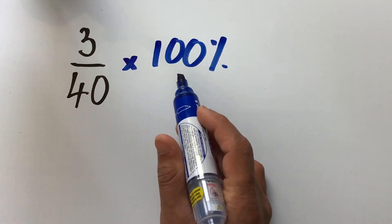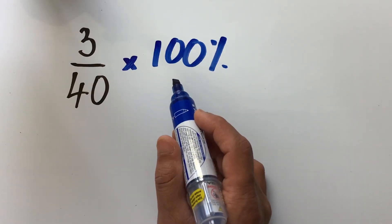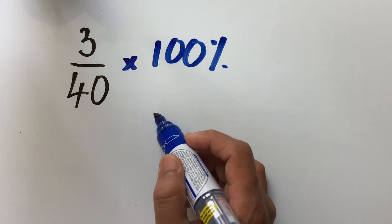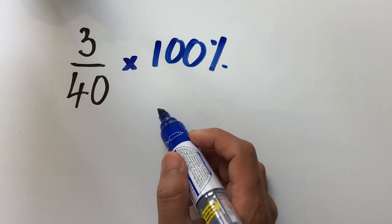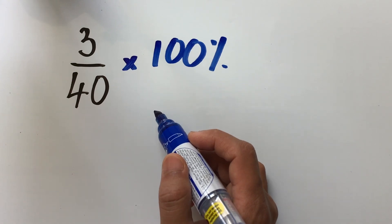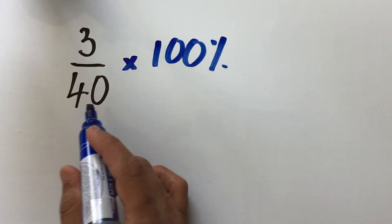Now, why 100 percent? Because we know that 100 percent is same as 100 over 100, which is 1, and therefore, multiplying by 100 percent is same as multiplying by 1, and we are not changing the value of the number.